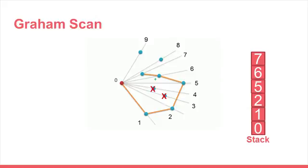Next point is 7. A left turn is made at 6 coming from 5. So we continue. The stack contains 0, 1, 2, 5, 6, and 7.